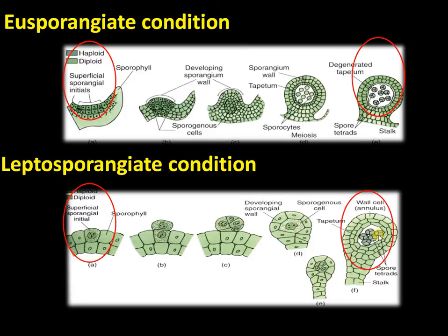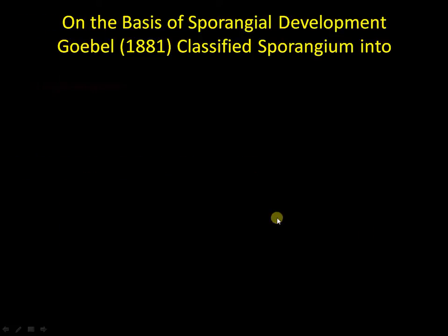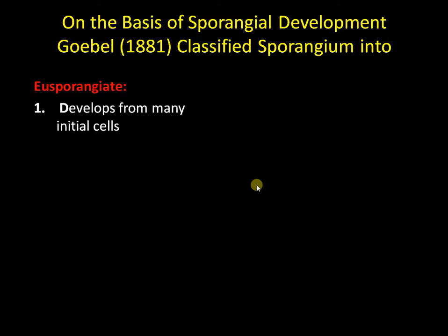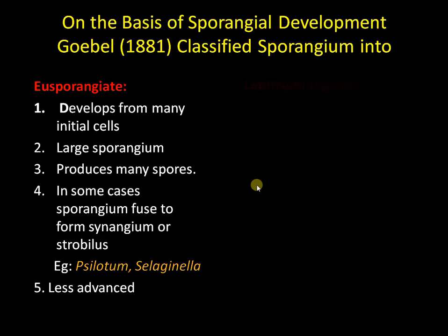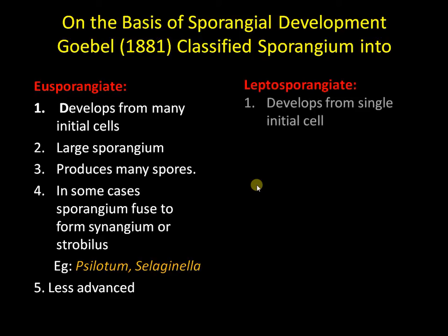Moving into the differences between eusporangiate and leptosporangiate ferns — this classification is based on sporangial development. In the eusporangiate condition, the sporangium develops from many initial cells, resulting in a large sporangium with many spores. The sporangia sometimes fuse to form specialized structures called synangia or strobili, as seen in Psilotum and Equisetum. Selaginella is also eusporangiate, and this condition is considered less advanced compared to leptosporangiate ferns.